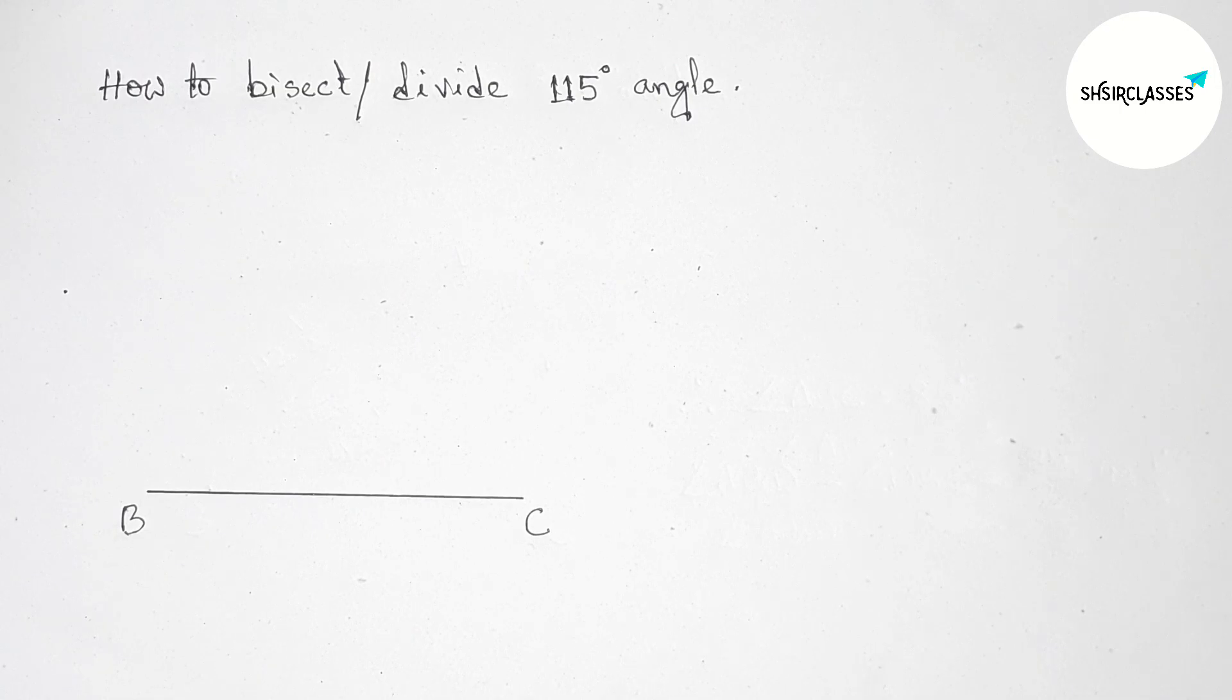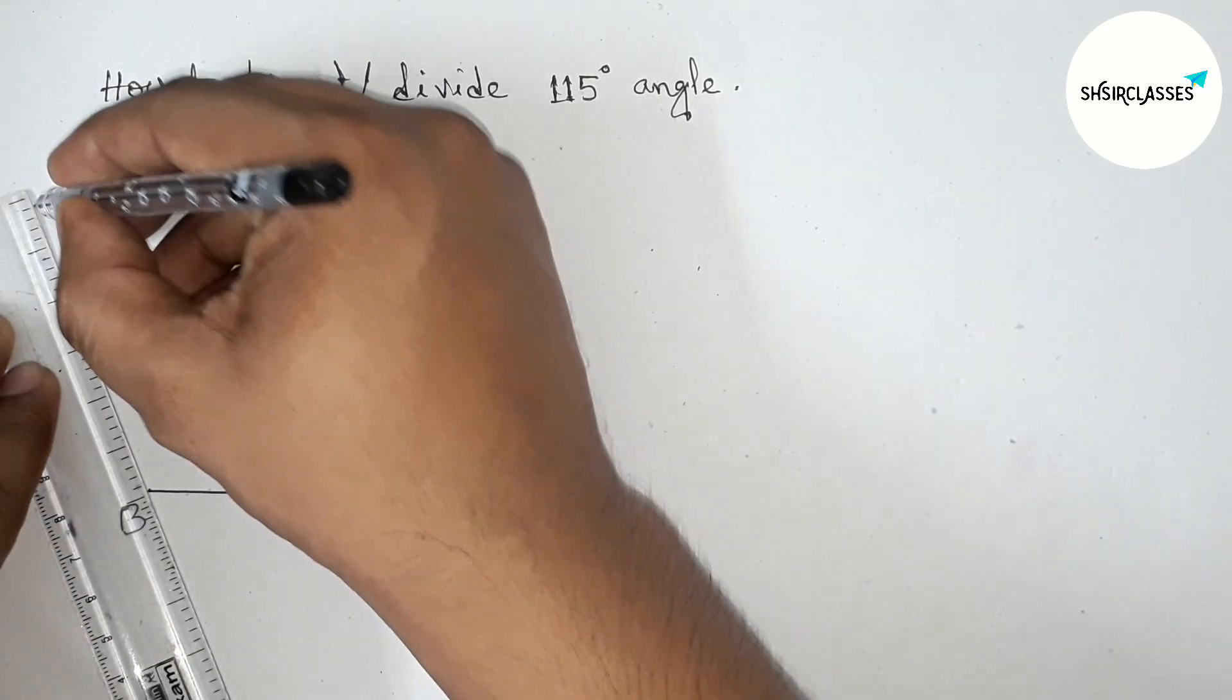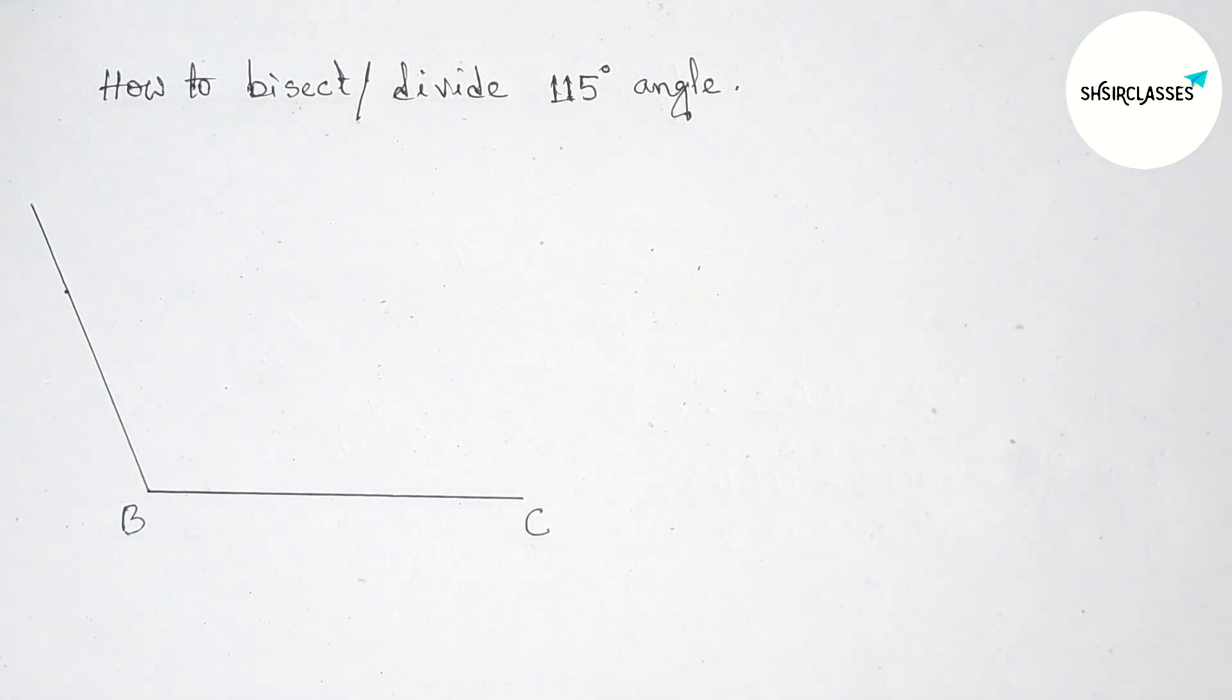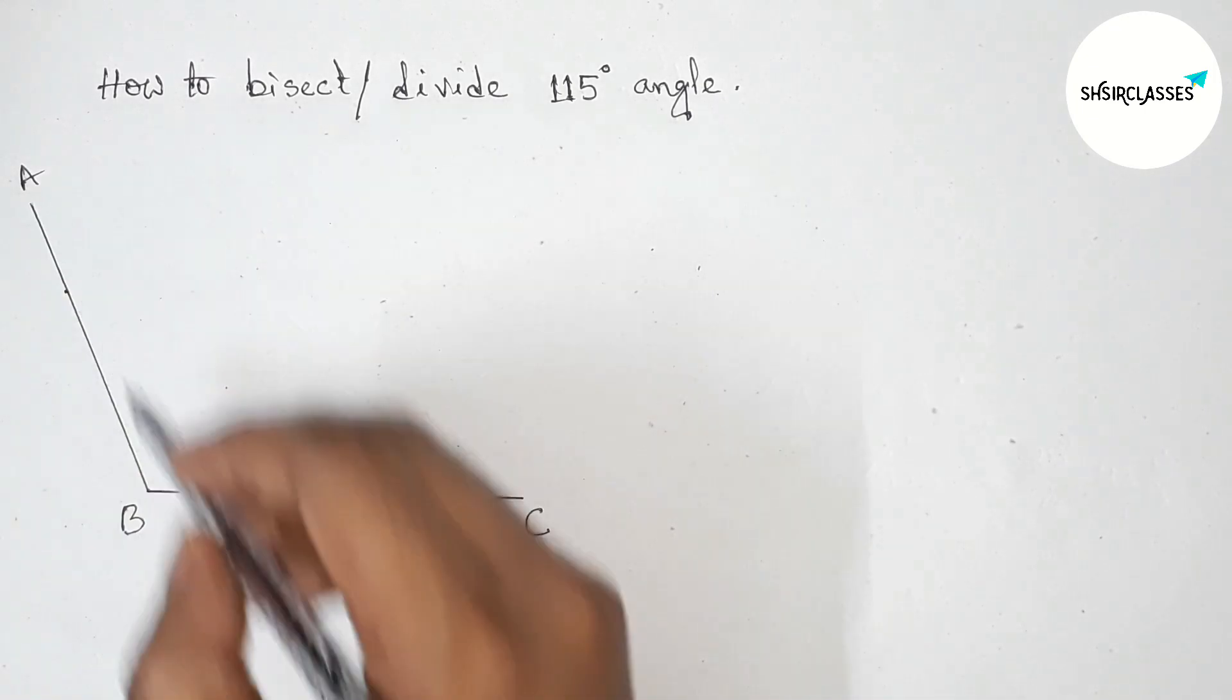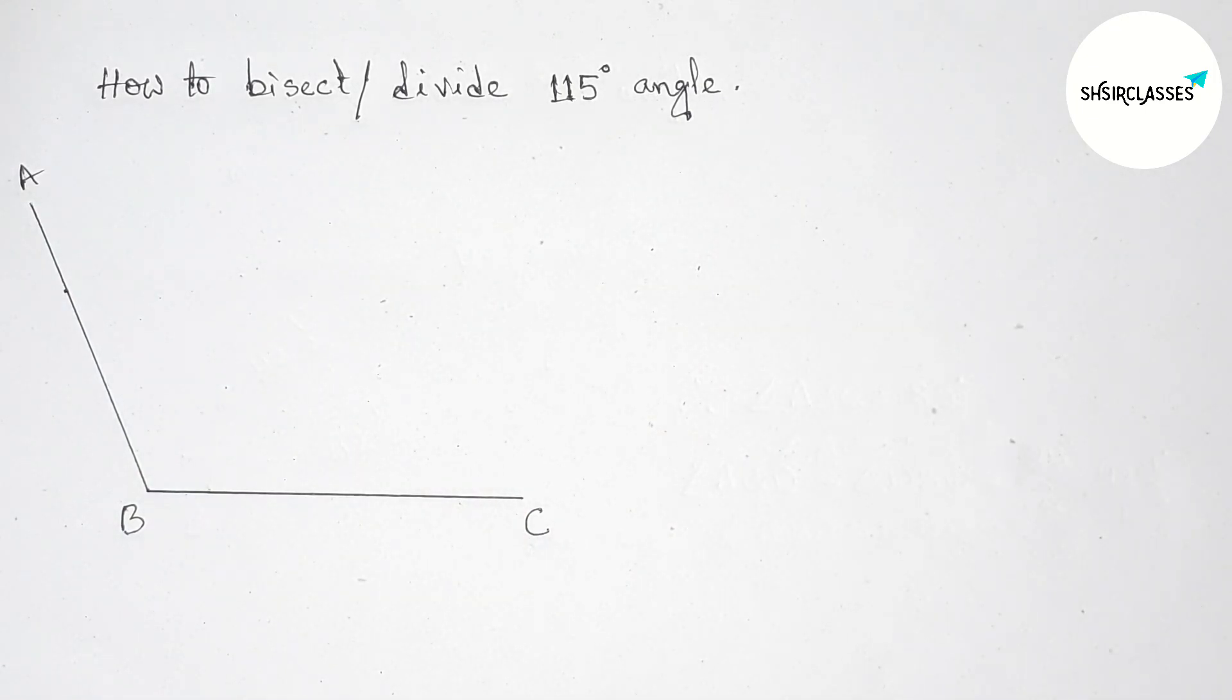Now joining this line and taking here point A. So angle ABC is 115 degrees.